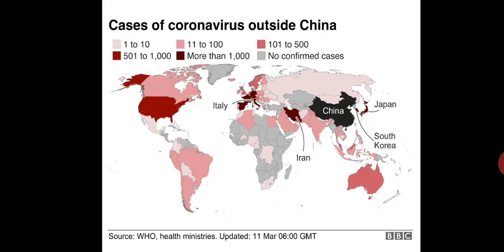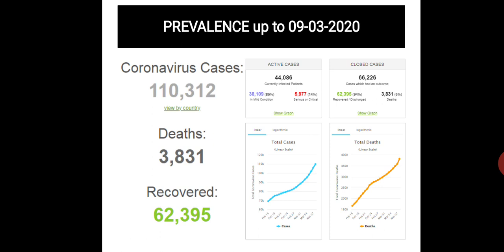Cases originated from China to other countries including Japan, South Korea, Iran, and Italy, and transmission continued all over the world. As of 9th March 2020, coronavirus cases were more than 1,000,000, deaths were about 4,000, and recovered cases were more than 62,000.